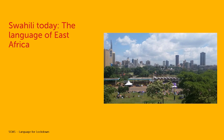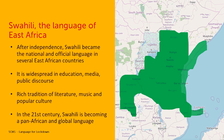Today, Swahili is the language of East Africa used for wider communication in all public domains and widely spoken throughout the region. After independence, Swahili became the national and official language in several East African countries — Tanzania, Kenya, and later Uganda. It is widespread in education, media and public discourse, and there's a rich tradition of liturgy, music and popular culture.